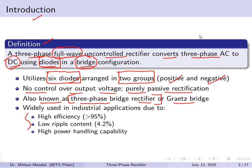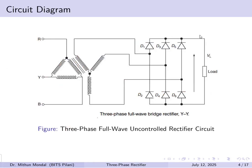These rectifiers are widely used in industrial applications because of their high efficiency, greater than 95%, low ripple content of 4.2%, and high power handling capability. These are the main advantages that make industrial applications prefer full-wave over half-wave rectifiers.